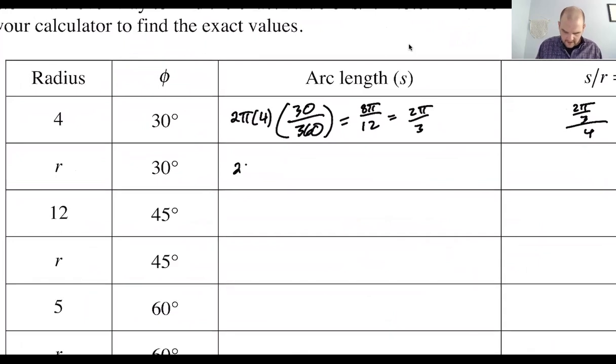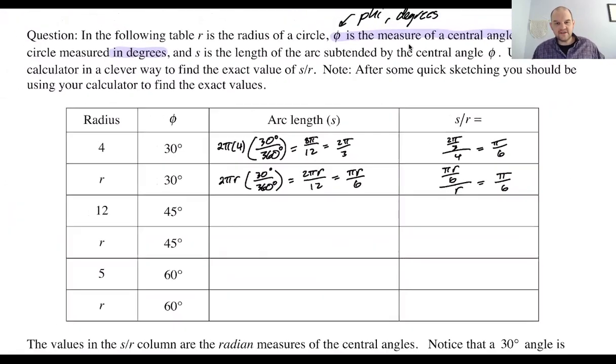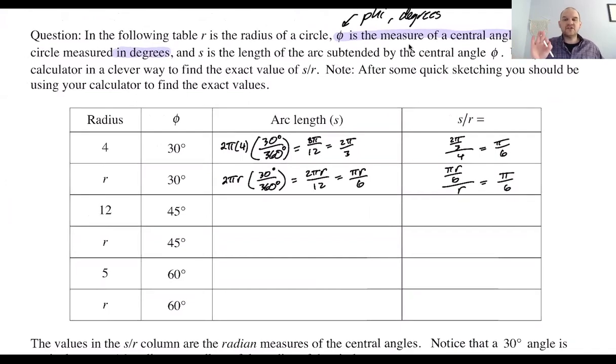If the radius is r, what would we have? We'd have 2πr, and then we would have 30 degrees out of 360 degrees. So I should really be putting degree symbols. And so this will be 2πr out of 12, or πr over 6. And then if I do πr over 6 divided by r, that gives me π over 6. So that's kind of interesting. No matter what the radius is, if I have a 30 degree central angle, the ratio of the arc length to the radius is always going to be π over 6, it looks like. We used r, we didn't use a specific number. It always is going to be π over 6.